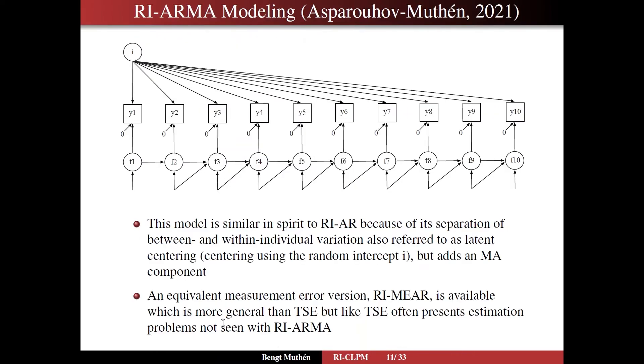On slide 11, then, we are introducing in this paper, this new paper, RI-ARMA modeling. So here, we are going to take the idea of a random intercept, no regressions among the observed variables, but regressions among latent underlying variables, which have this moving average structure, where the residual of F2 influences F3, while still having these zeros up here as in the RICLPM.